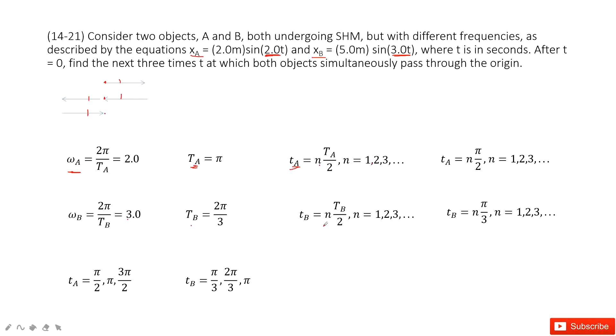Next is t_B. Similarly, every half period it goes through the origin. We input the period to get a function that looks like this. Then you put n equal to 1, 2, 3, and you can get the first three times for A and B to go through the origin.